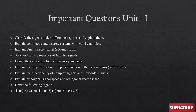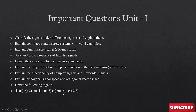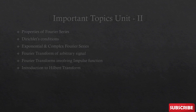For Unit 1, theory questions may include: classify signals under different categories, explain unit impulse, ramp signal, state and prove properties of impulse signal, explain properties of unit function, and explain the functionality of complex and sinusoidal signals. For problems, questions like 'draw the following signals r(t)' may appear. Also important: explain orthogonal signal space and orthogonal vector space. Please use a pencil and black pen for diagrams in your answers.